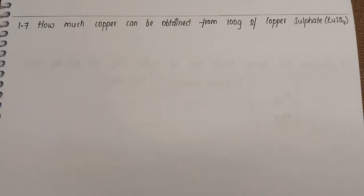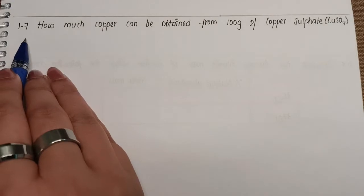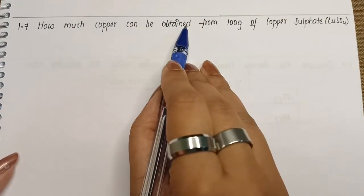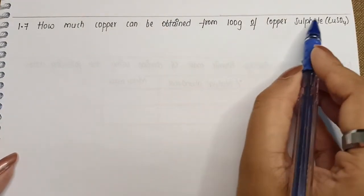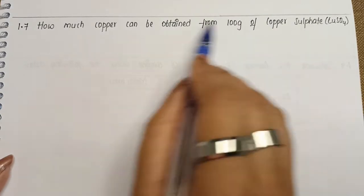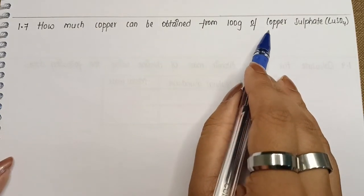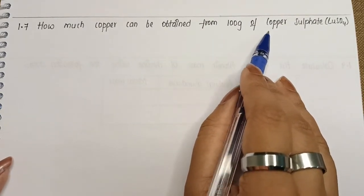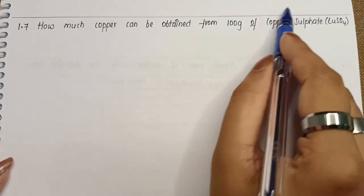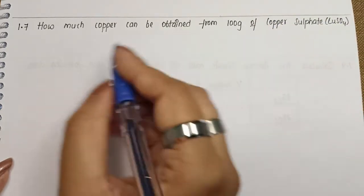So children, question number 1.7: How much copper can be obtained from 100 grams of copper sulphate? It's a very simple question. For this, we are going to first find out the molecular mass of copper sulphate.